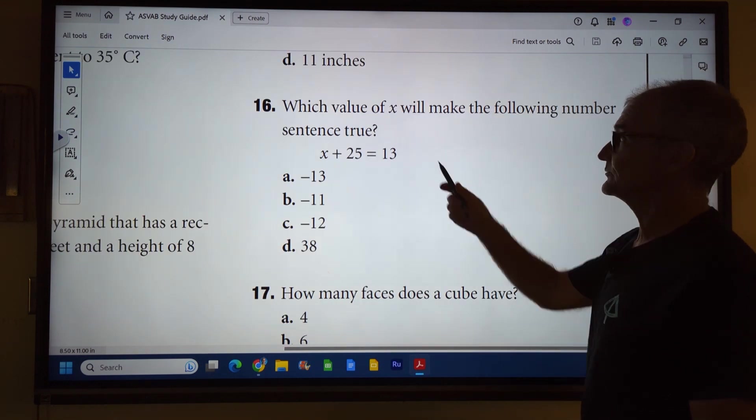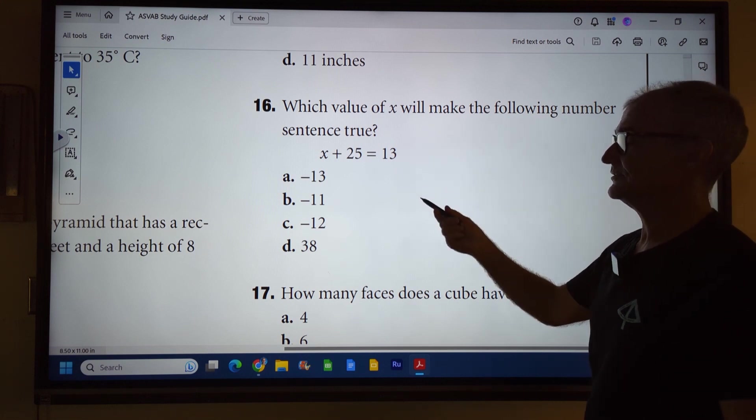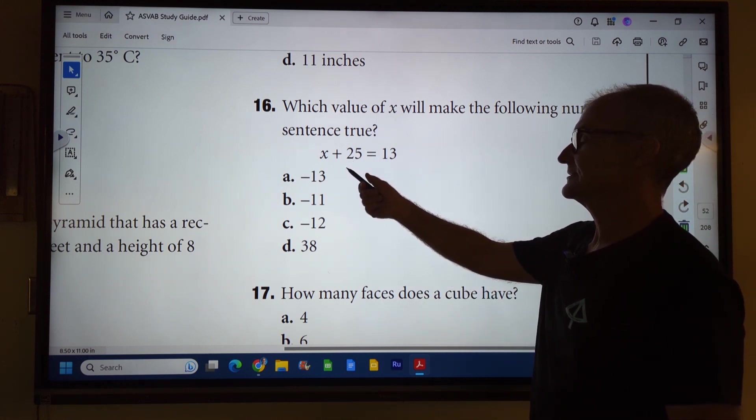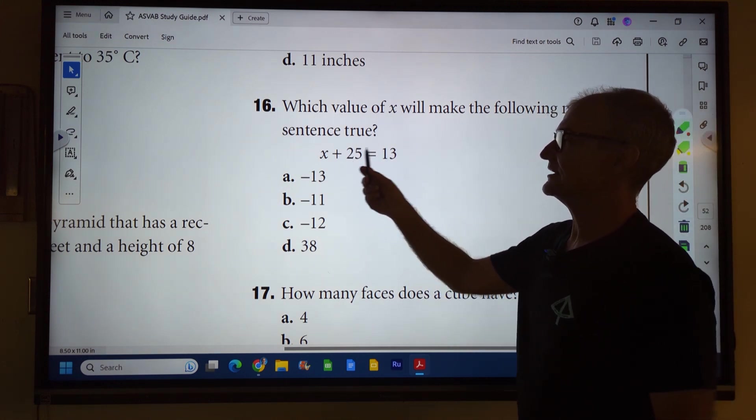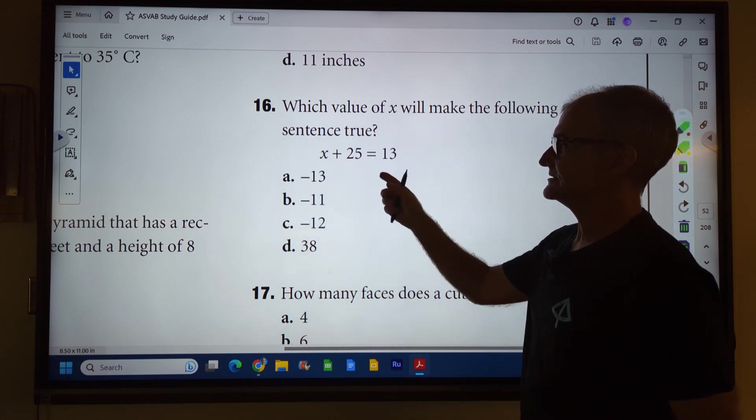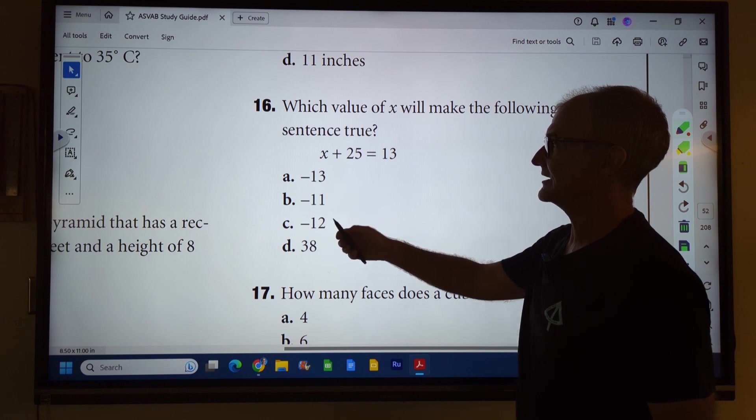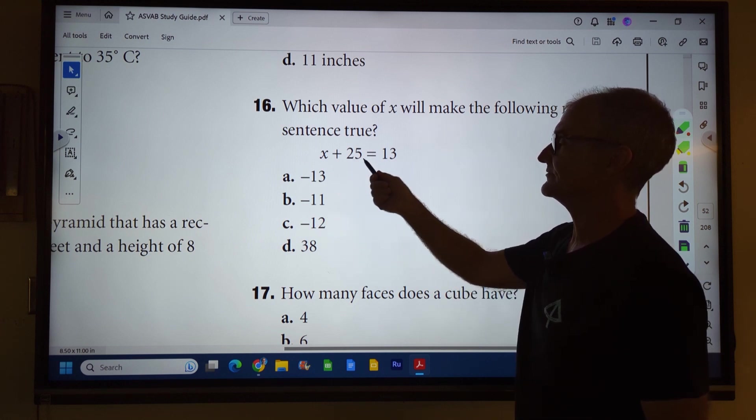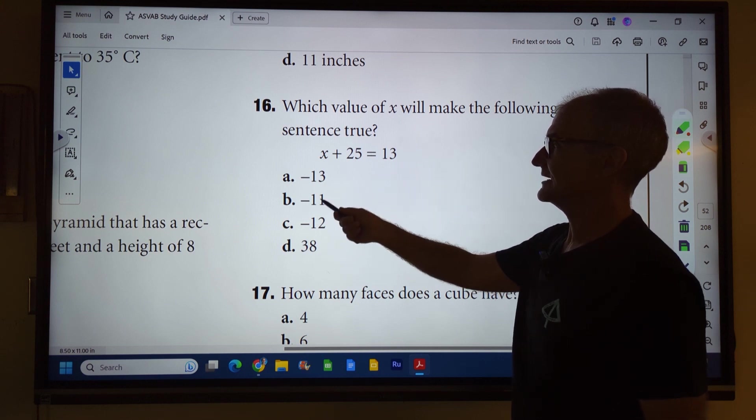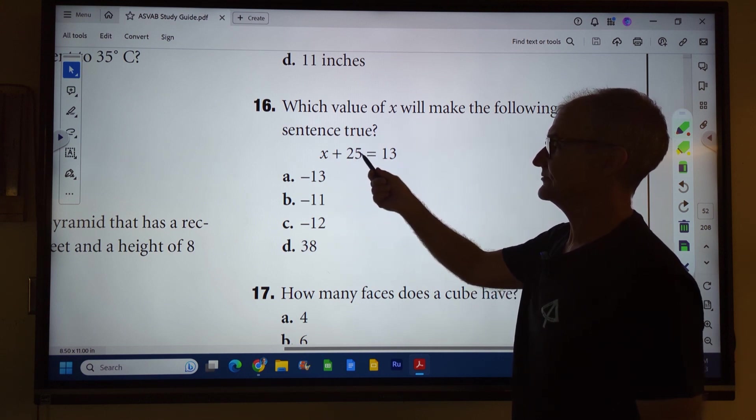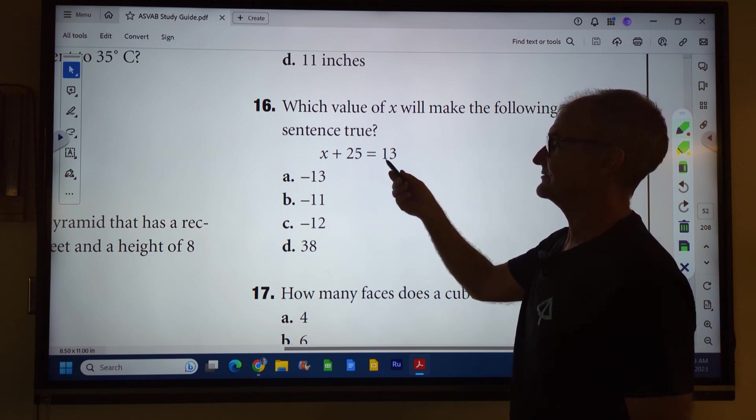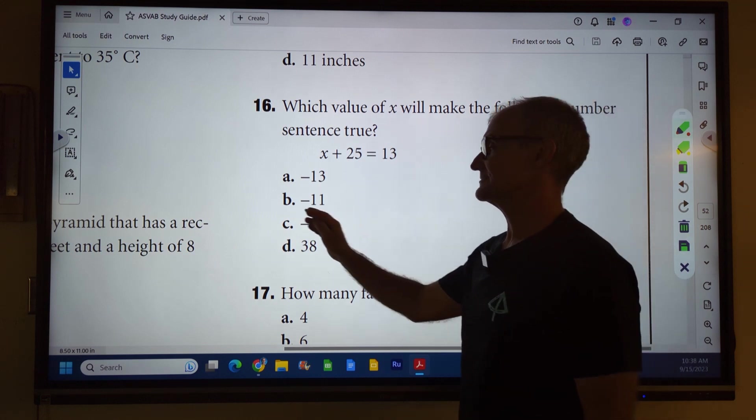Number 16: Which value of x will make the following number sentence true? Just an algebraic equation. You need to solve for x. And as I'm looking at this thing, if you can't quite remember, you got to subtract 25 from both sides. You could just kind of figure it out by plugging values in. Negative 13 plus 25 is going to give you negative 12. Negative 11 is going to give you 14. Negative 12 and 25 is going to give you the 13. Correct answer, answer C.